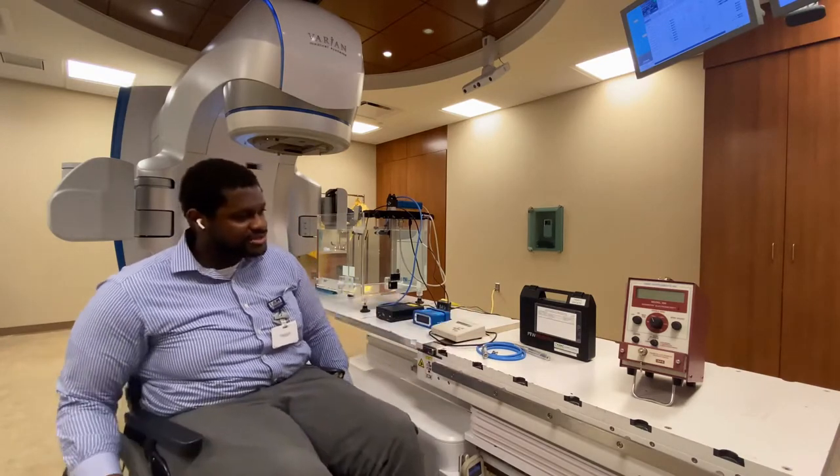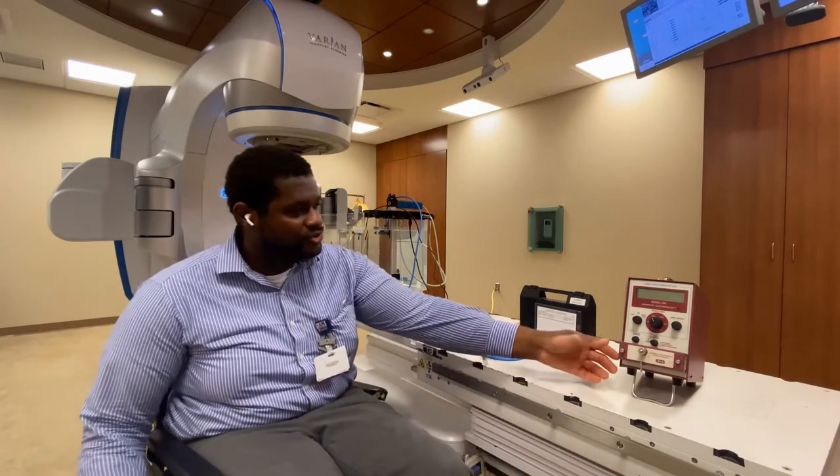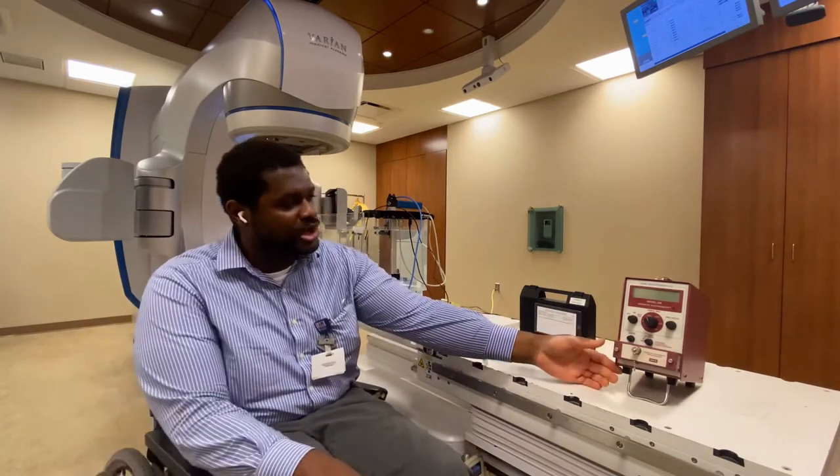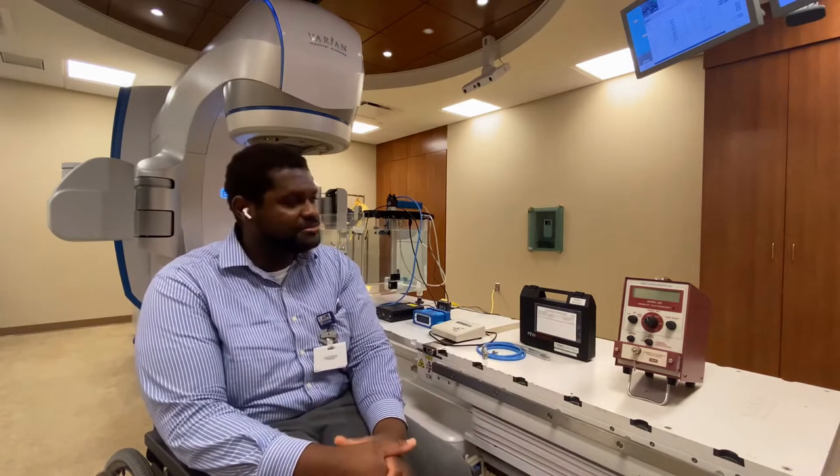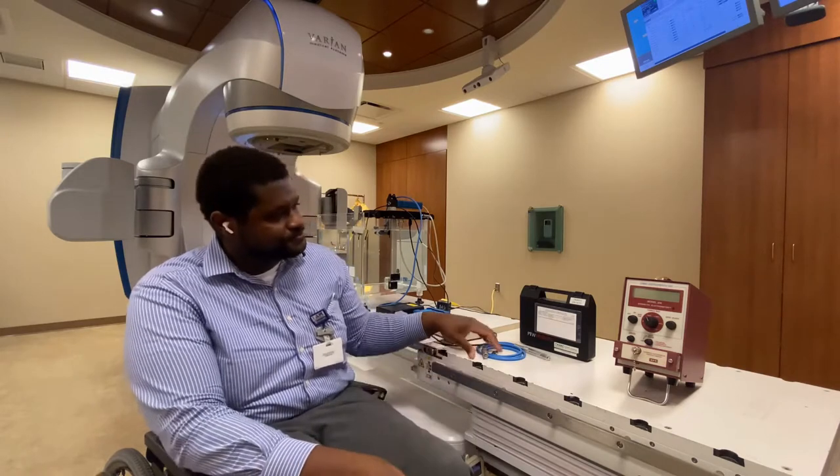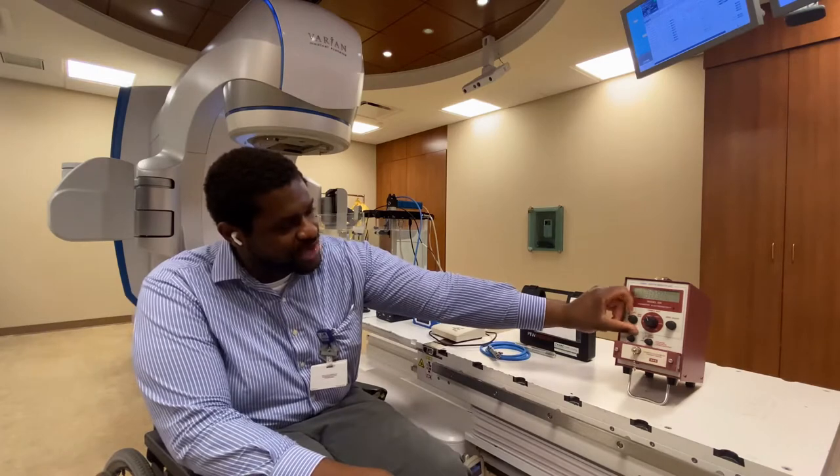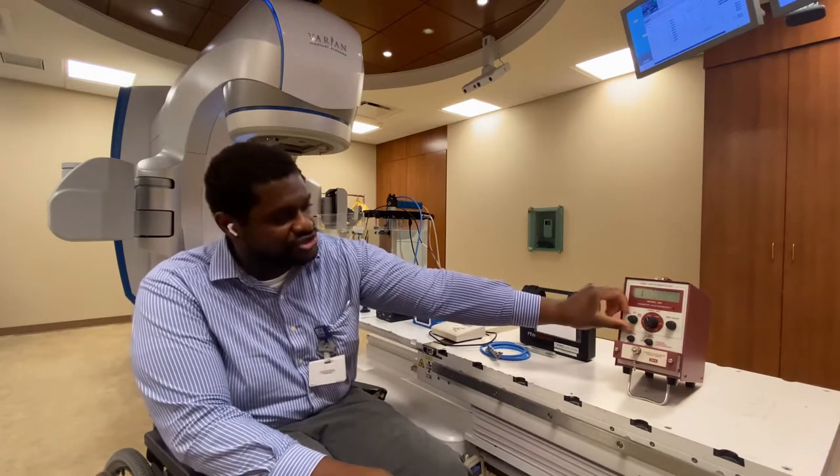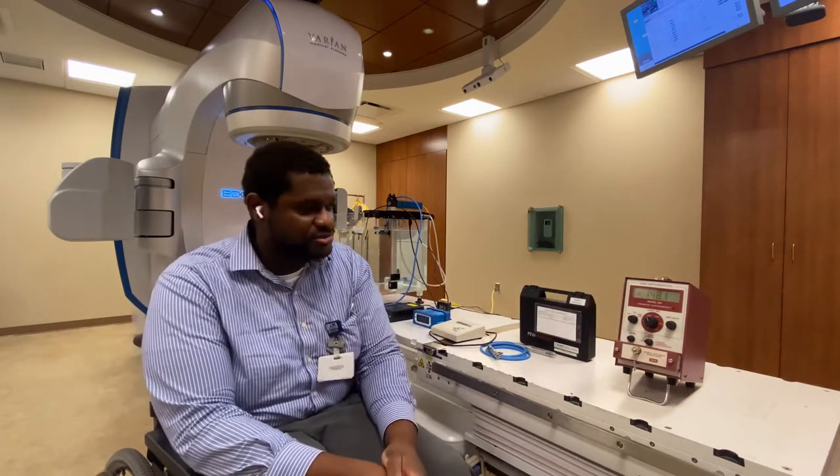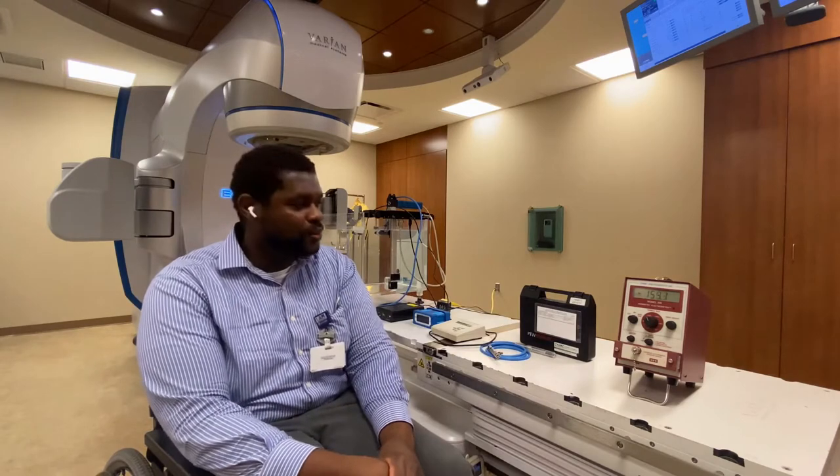One thing to note about the electrometer is if you set your bias to minus 100 or plus 100, that essentially means that you're at full collection for plus or minus 300 volts. One quick thing to do is to ensure that you set it to the correct voltage. You can also do a check bias which essentially will tell you what bias that you're set at. Let's begin.